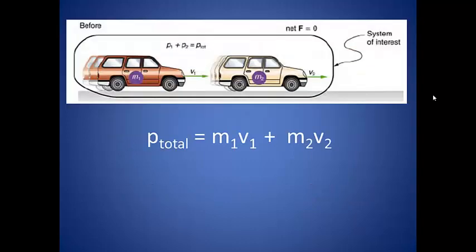This conservation is much easier to see when we have two objects fairly close in mass. Take the example of two cars coasting in the same direction. Each car has its own mass and is moving at its own velocity. The total momentum of this system is equal to the momentum of the first car added to the momentum of the second car.